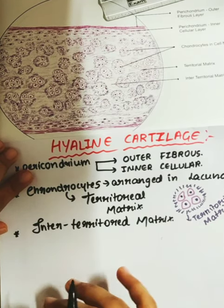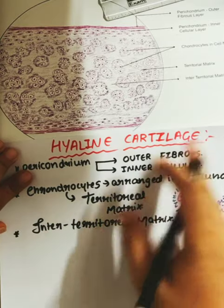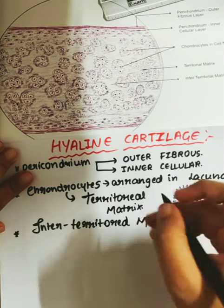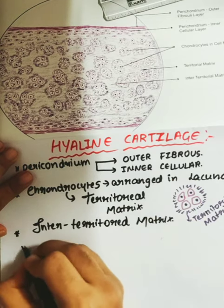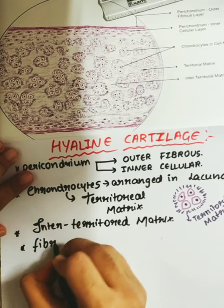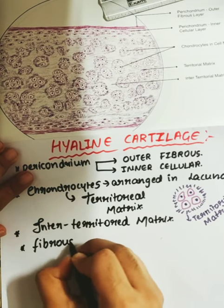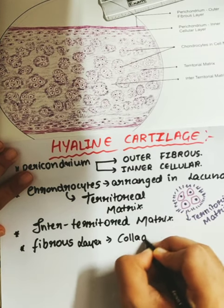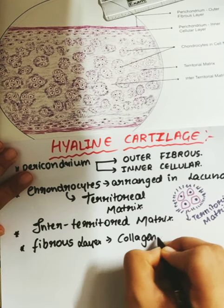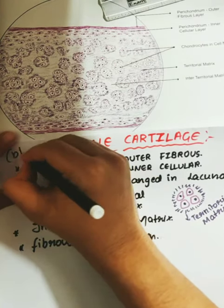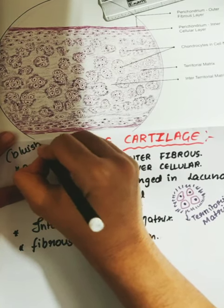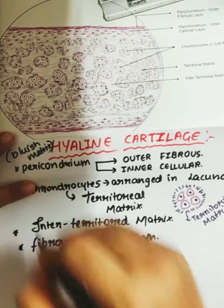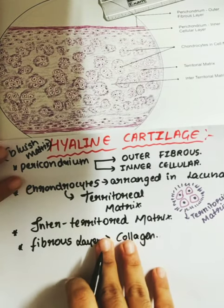There are two layers to remember: the outer fibrous layer and the inner cellular layer. The fibrous layer is made up of collagen fibers. Hyaline cartilage usually has a bluish matrix.